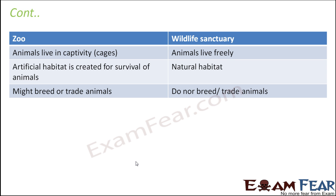Differentiating zoo and wildlife sanctuary: In a zoo, an ex situ conservation technique is followed — animals are not in their natural habitat; they live in captivity inside cages. But in a wildlife sanctuary, animals live freely in their natural habitat. The zoo habitat is artificially created — for example, when lions are kept in a zoo, an atmosphere resembling their habitat must be created so they can survive there.